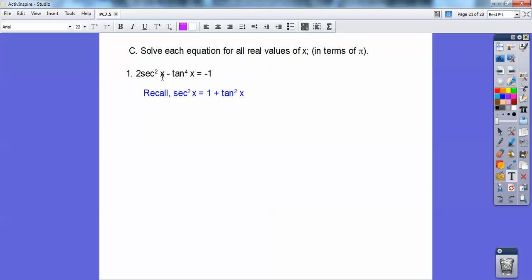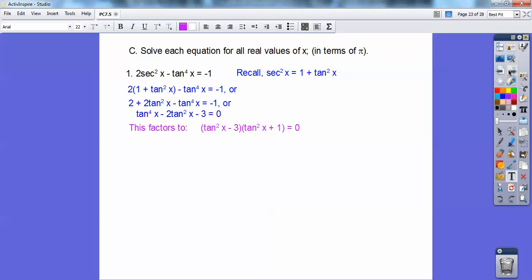So this is going to be two times one plus tangent squared right here. So go ahead and distribute the two through, and then put it in descending order. There's my tangent to the fourth, and I multiplied both sides by negative one. And then this factors right here to tan squared x minus three, and then tan squared of x plus one equals zero. Then set those factors equal to zero.